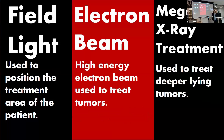There were three modes of operation of the Therac-25. A field light, which was used to position the beam over the patient — it was just light. An electron beam, which was a high energy beam used to treat tumors close to the surface of the skin. And a megavolt x-ray treatment, which was used to treat deeper lying tumors. The megavolt x-ray beam is at an extremely higher intensity than the electron beam, but the electron beam can still be dangerous if it is not properly implemented.